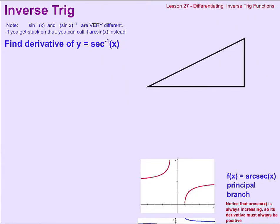It works for all the other trig functions too. Our function here, the inverse secant of x, is the same idea. y equals the inverse secant of x means y is the angle, and the x — the input into the inverse secant — is some secant value, which, unlike sine, is never between negative 1 and 1. So we have y equals the inverse secant of x, which is the same thing as the arc secant of x. What we're going to do is find the derivative of that function.